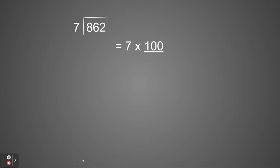Here's an example. If I have 862 divided by 7, I'm going to think — first of all, I see my number 862 is in the hundreds place. The easiest place to start is to start with my divisor and see if I can multiply that by 10. Since 800 is larger than 7, I can multiply 7 times 100. So I'm going to start by multiplying 7 times 100. 7 times 100 is 700.